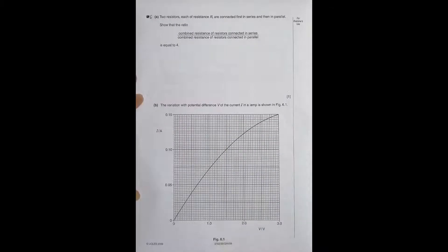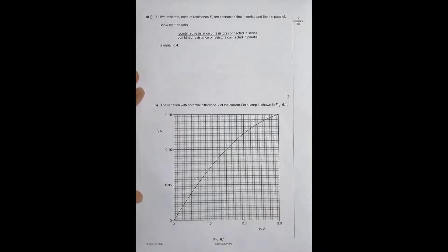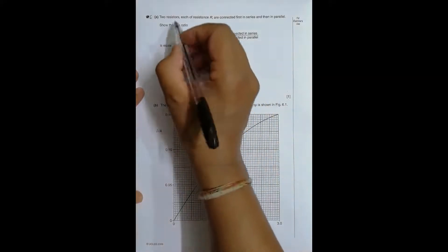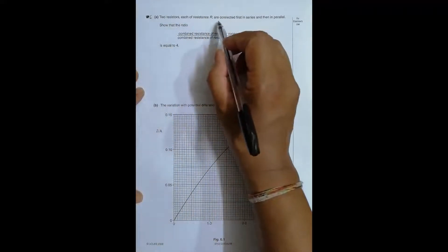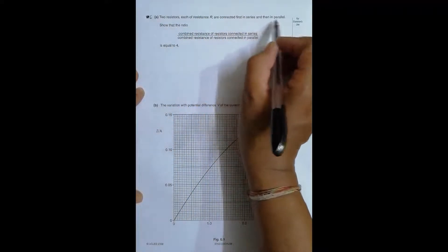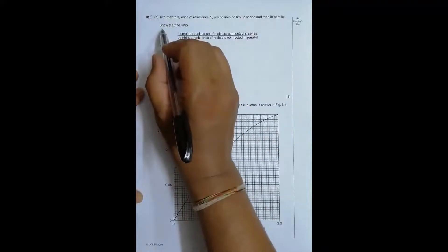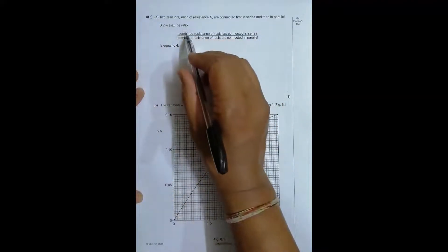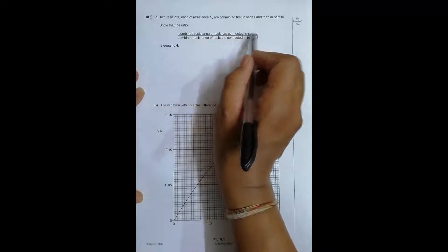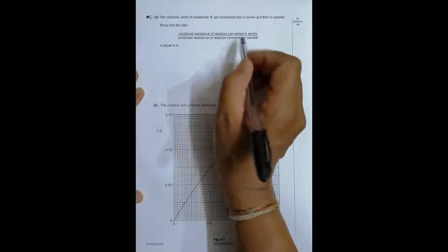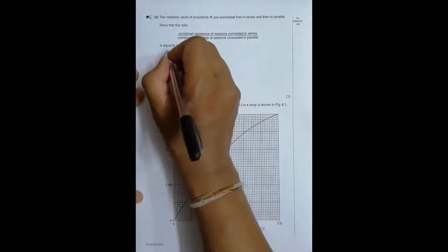Hello folks. This is the 2009 October/November Paper 22, question number 6. It is concerned with current electricity. It says that two resistors each of resistance R are connected first in series and then in parallel. Show that the ratio of the combined resistance in series to the combined resistance in parallel is equal to 4.